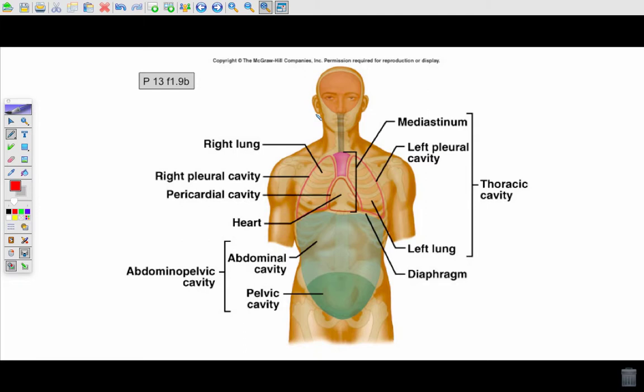Let's talk about how the thoracic cavity is further divided. The thoracic cavity is made up of three sub-cavities: the left pleural cavity, the right pleural cavity and the mediastinum. Within the mediastinum you also have the pericardial cavity.